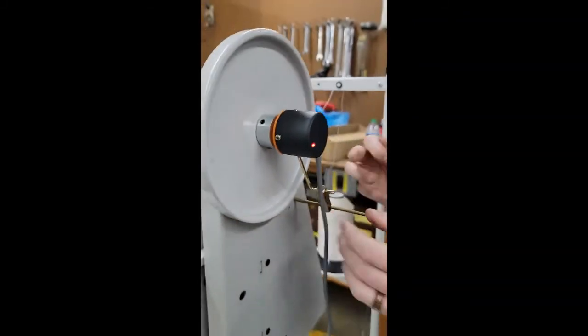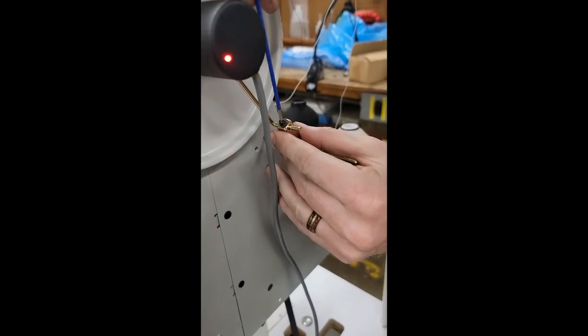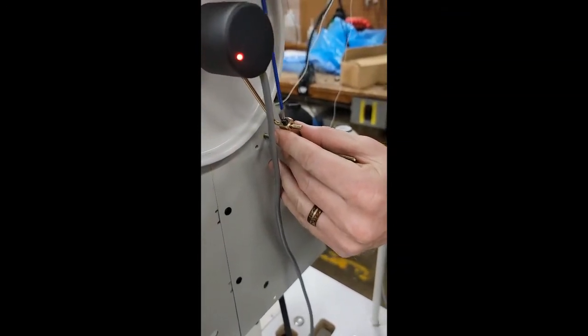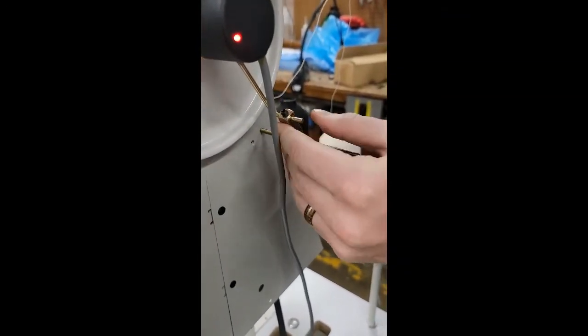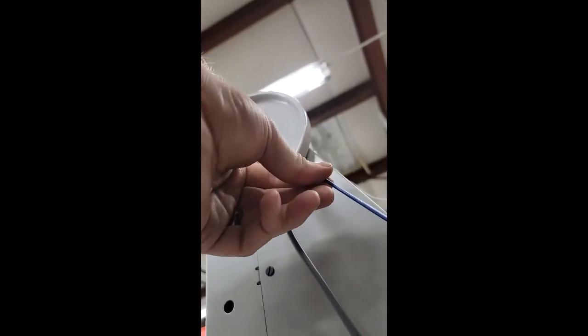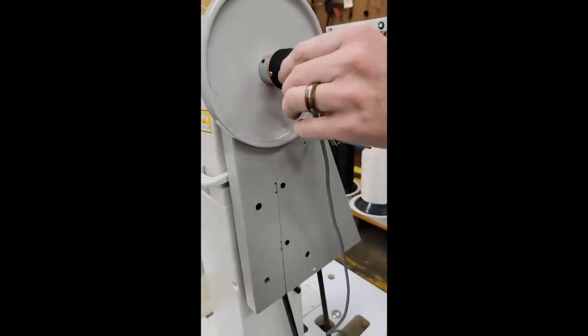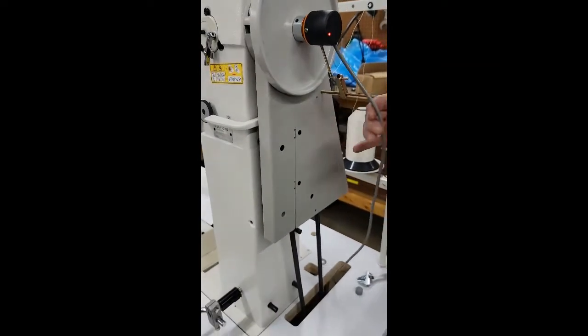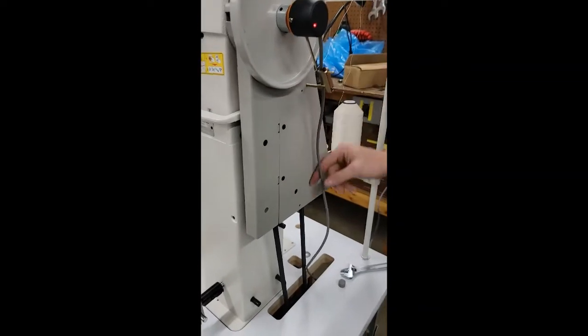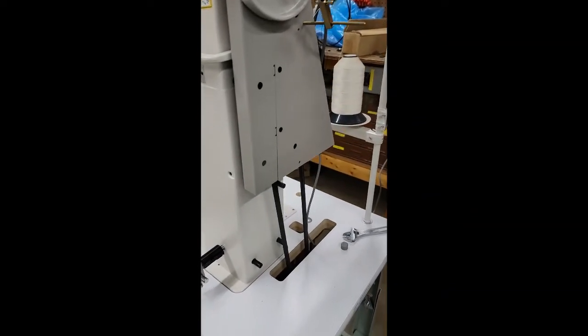Once you tighten that, you can go ahead and tighten your bar down, make sure it stays snug. So it's nice and tight, nice and snug. If you have something to tie your cord up to, get it out of the way.